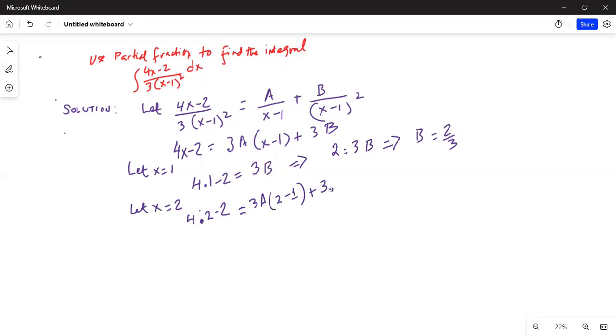We already know B is 2/3, so 4 times 2 is 8 minus 2 equals 3A plus 2. 8 minus 2 is 6 equals 3A plus 2, so A equals 4 over 3. A is 4/3 and B is 2/3.